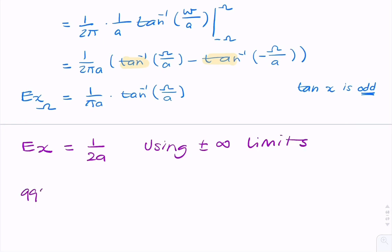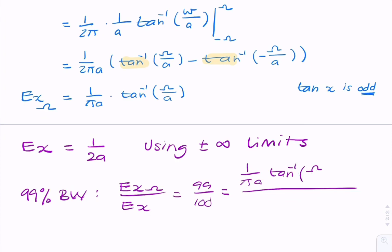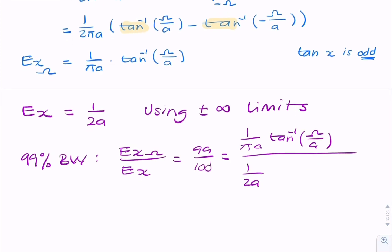So for the 99% bandwidth, what we'd say is that the ratio of the two energies should be 99%. So that's 1 over pi a tan inverse (omega over a) divided by 1 over 2a. And the question, remember, is find that. That's the only unknown. So we're finding omega in terms of a.